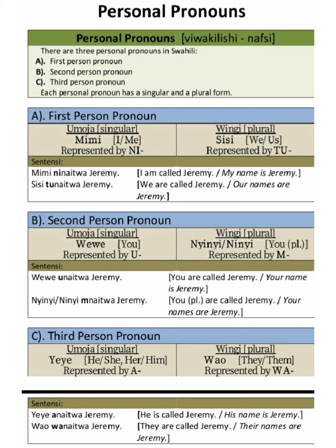The second person pronoun is 'you.' In Kiswahili, 'you' is 'wewe,' and it is represented by the letter 'u' when constructing a sentence. For example: 'Wewe unaitwa Jeremi' — you are called Jeremi, your name is Jeremi. Notice how we use 'wewe' and 'u' in the sentence.